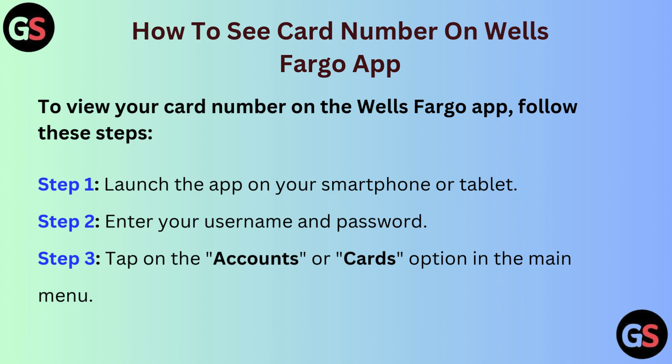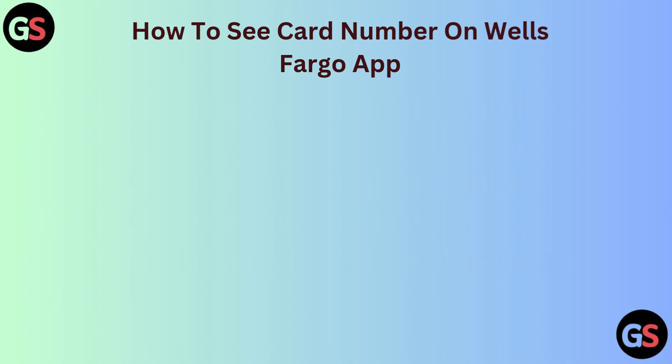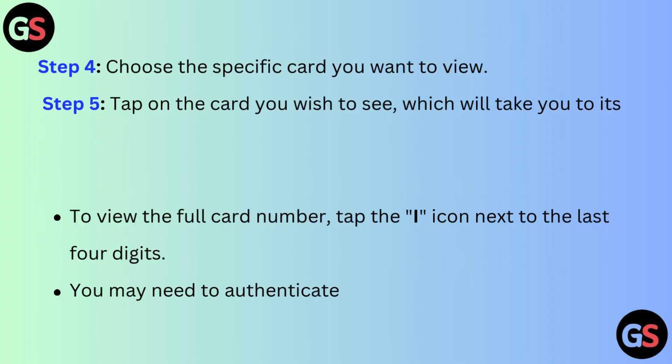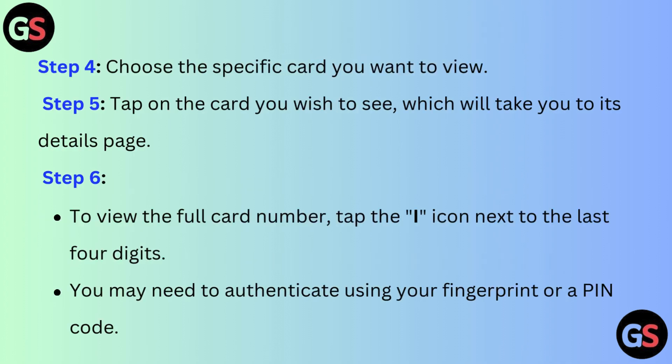Step 3: Tap on the accounts or cards option in the main menu. Step 4: Choose the specific card you want to view. Step 5: Tap on the card you wish to see, which will take you to its detailed page.